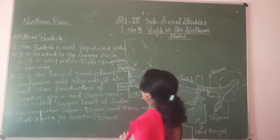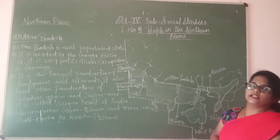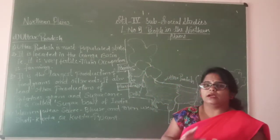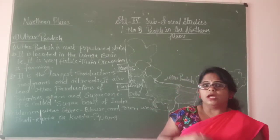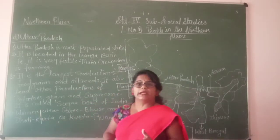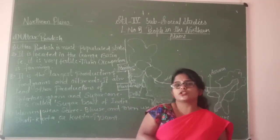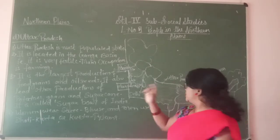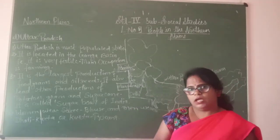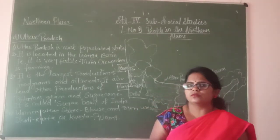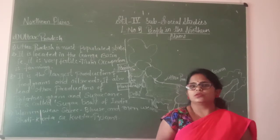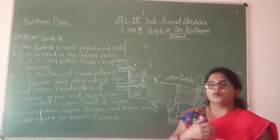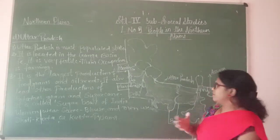Uttar Pradesh is the most populated state in India. It is located in the Ganga Basin, that's why the land is very fertile. Their main occupation is farming — the largest production of food grains, oil seeds, potatoes, and sugarcane. That is why Uttar Pradesh is called the sugar bowl of India. Women wear sari blouse and men wear kurta pajama. Their language is Hindi.